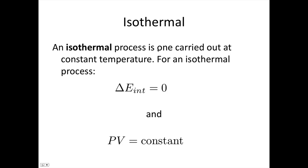An isothermal process is one that's carried out at constant temperature. So for an isothermal process, there is no change in internal energy. And we also know from the ideal gas law that PV is constant. So if you see that something is isothermal, you can immediately assume these two equations.